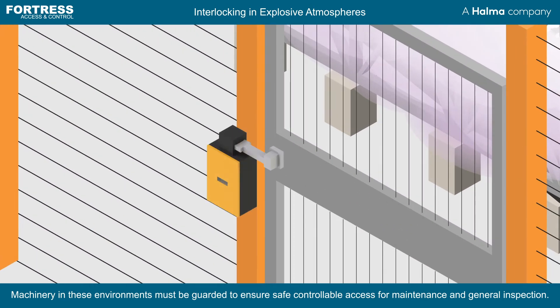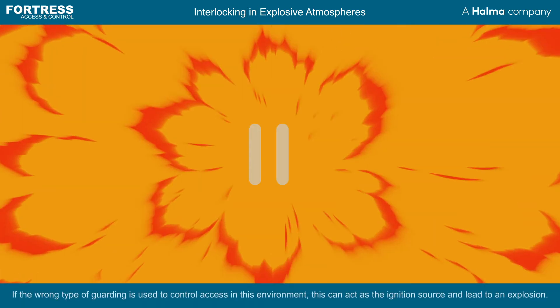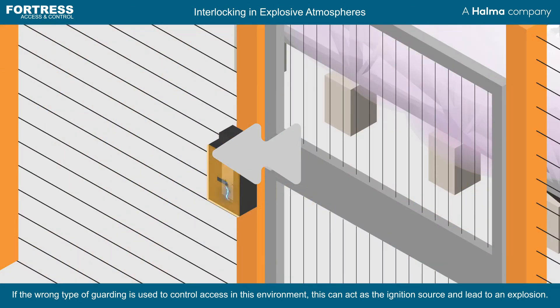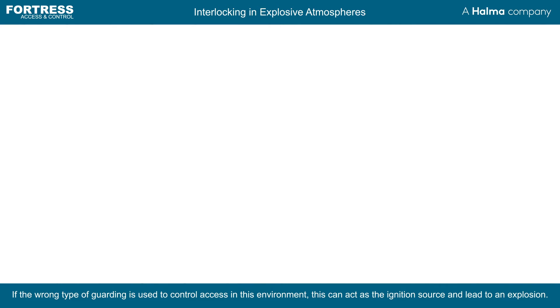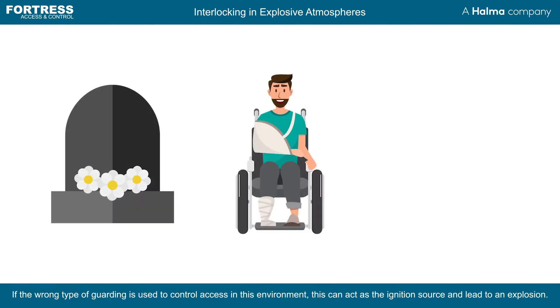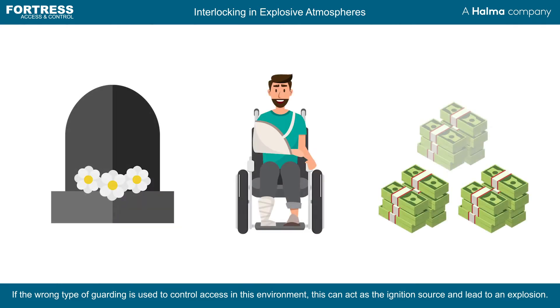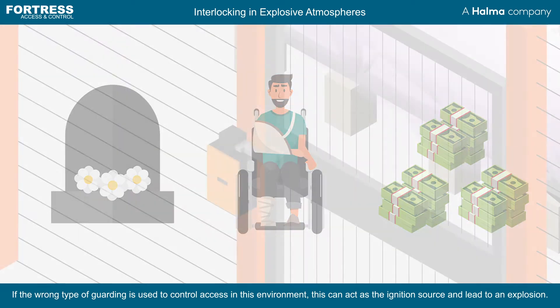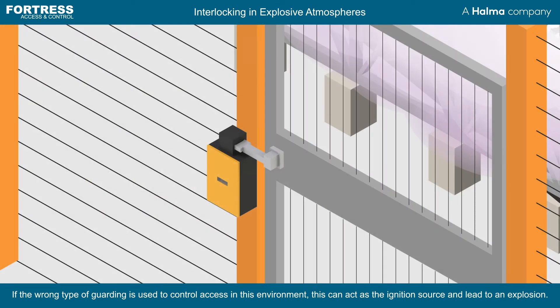These guard locking or guard switching devices are typically mounted close to the machine that they guard. If a product not designed and tested for an explosive atmosphere is used in these locations, a spark or an electrostatic discharge at the device could ignite the combustible dust or the flammable gas and lead to an explosion. Explosions tragically cause loss of life, injuries, and expensive and extensive damage to facilities and equipment.